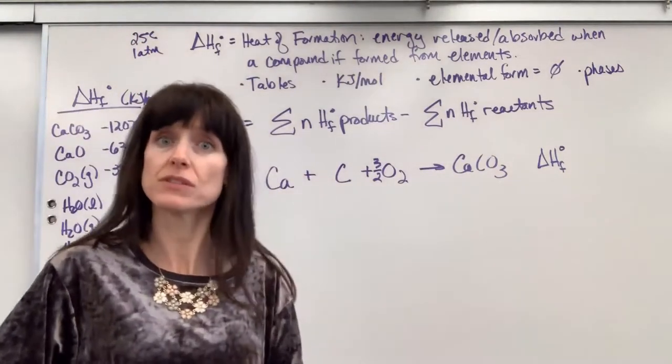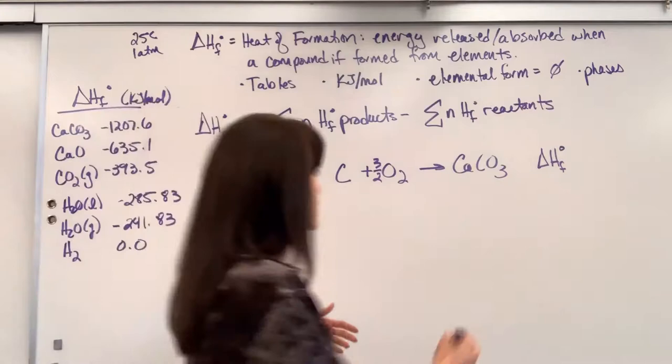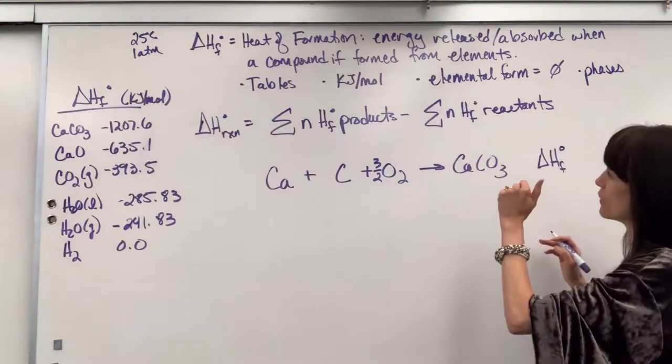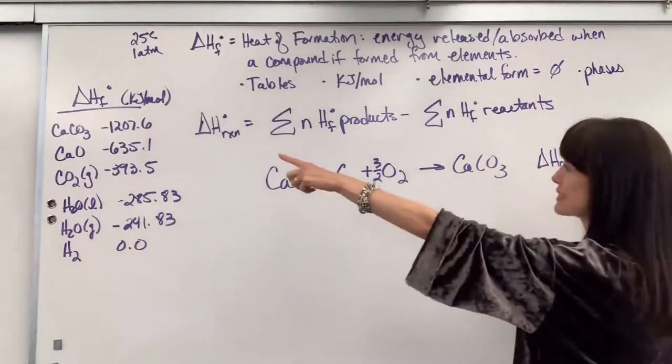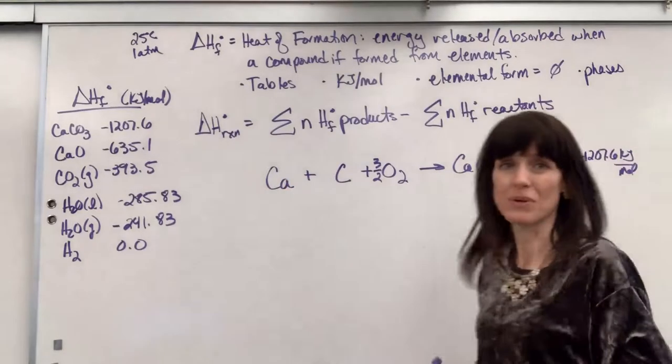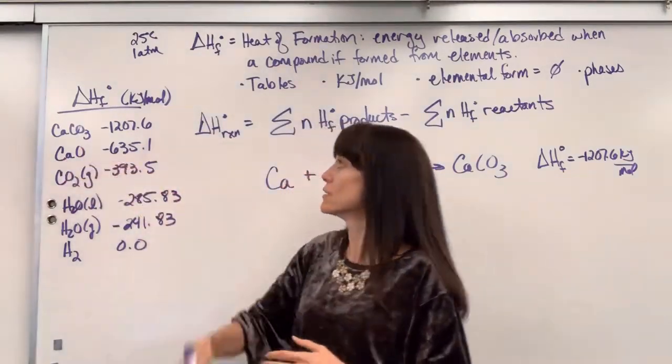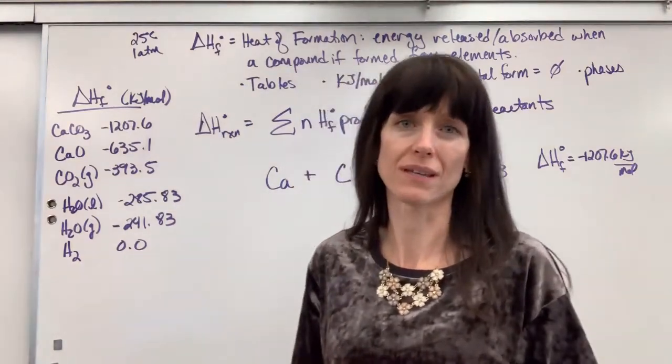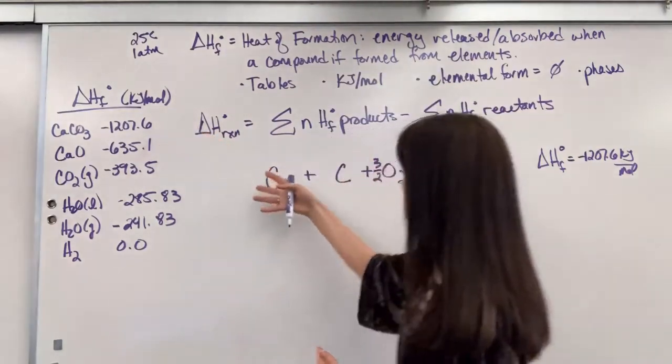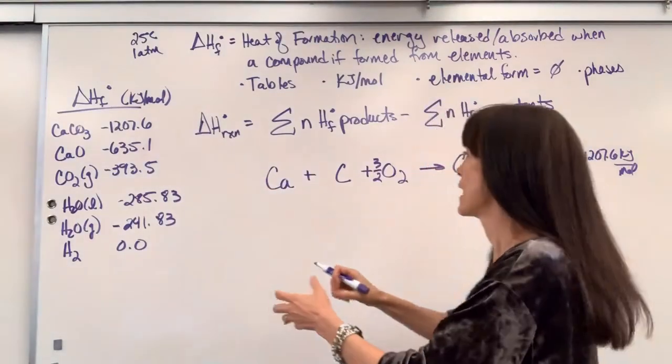If we ran this at 25 degrees C and this is what would be published in the table, if we combined calcium, carbon, 3 halves mole of O2 to form calcium carbonate, it would release 1,207.6 kilojoules per mole. That's what that means. And the same is true here. Calcium plus oxygen to produce calcium oxide releases 635.1 kilojoules per mole. So there might be a time in your homework that you'll be given these values and you're expected to interpret that and write out the elements as reactants forming the product.